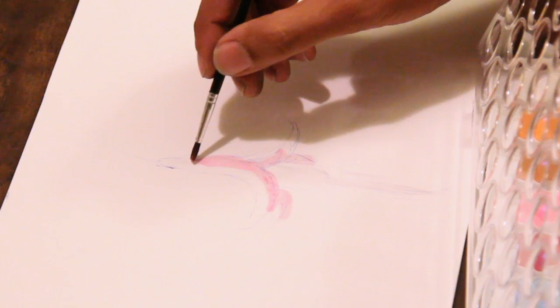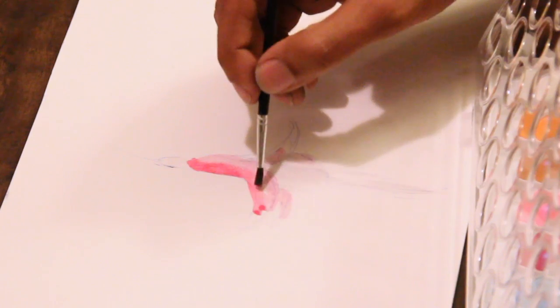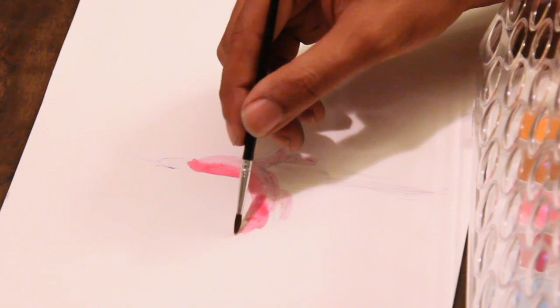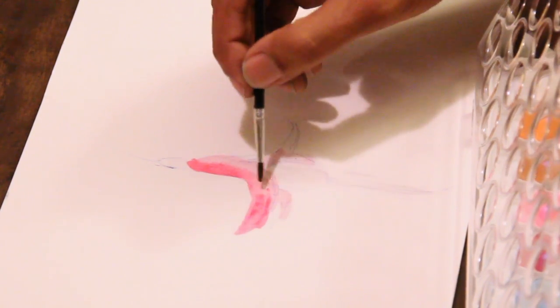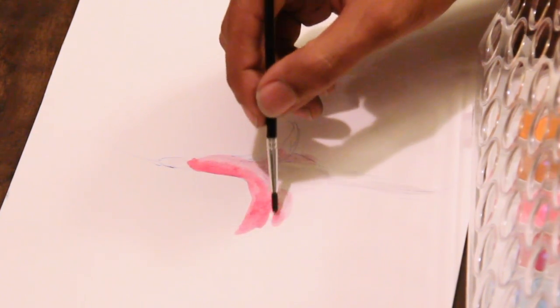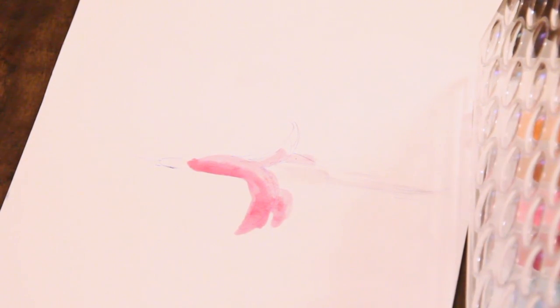Then I'm going to go for a darker color and mix these two right here. I'm going to come around to the top and start coloring the outer part of the leaves.